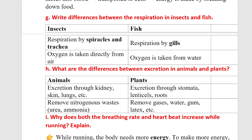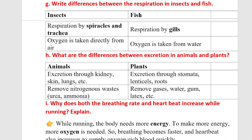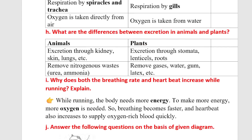Question: What are the differences between excretion in animals and plants? Animals excrete through kidneys, skin, and lungs. Plants excrete through stomata, lenticels, and roots. Animals remove nitrogenous wastes such as urea and ammonia. Plants remove gases, water, gum, and latex.